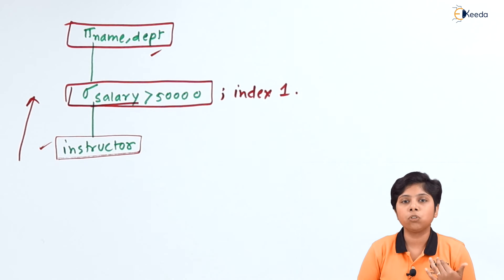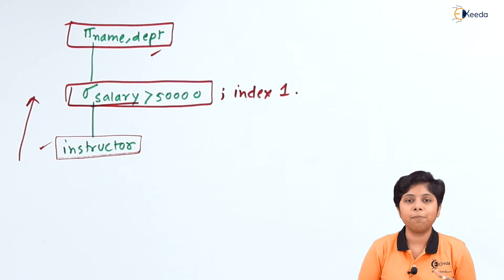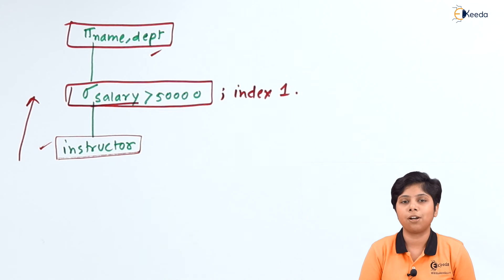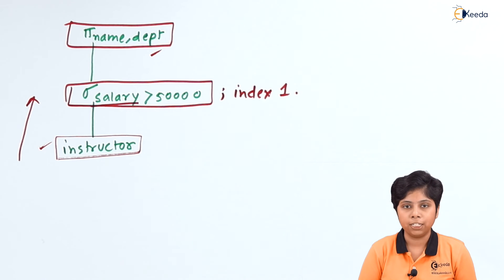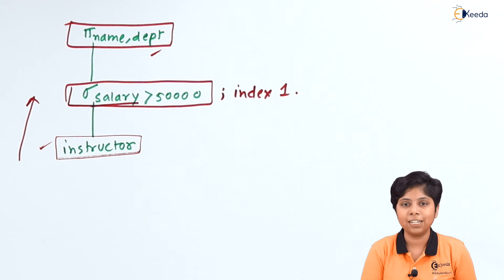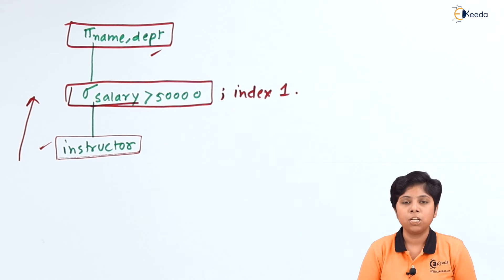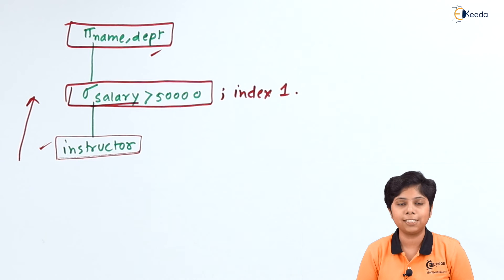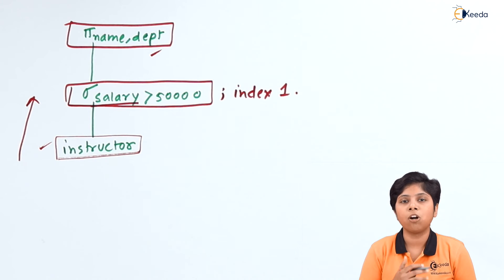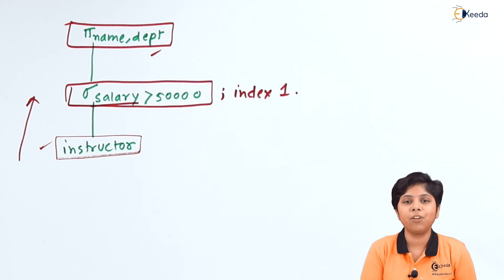We use a clustering index — one index attribute can point to many values, so many instructors can be grouped under salary 51,000. Now the evaluation plan is built. We pass the evaluation plan to the execution engine, which fetches details from the actual relation and builds the output as the query result. The user sees only the query and the result, but the system goes through all these steps. While optimizing, we can use specialized database features like indexing and hashing.